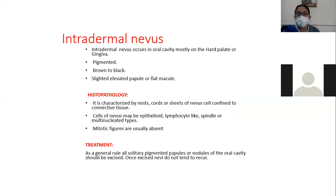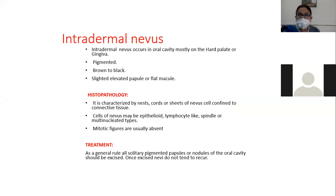The intradermal nevus occurs in the oral cavity, mostly on the hard palate or gingiva. It presents as a pigmented lesion, brown to black in color, as slightly elevated papules or flat macules. Histopathologically, it is characterized by nests, cords, or sheets of nevus cells confined to the connective tissue. The cells of a nevus may be epithelioid, lymphocyte-like, spindle, or multinucleated types. Mitotic figures are usually absent.